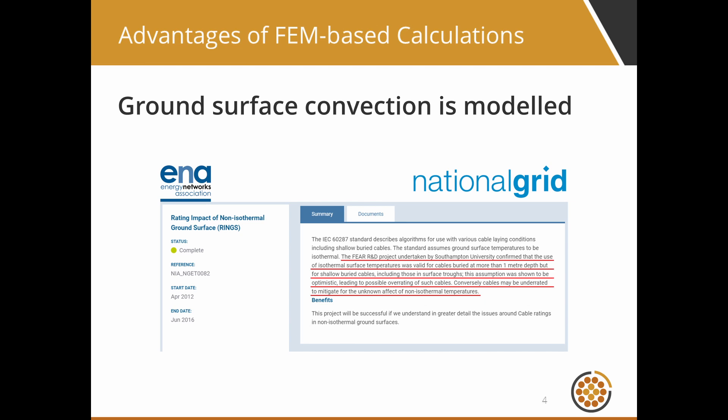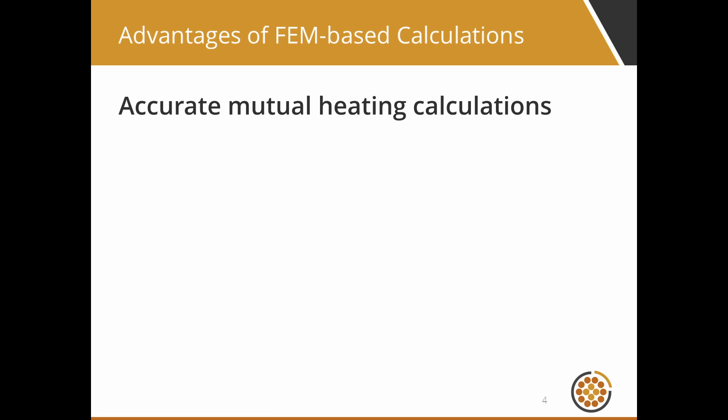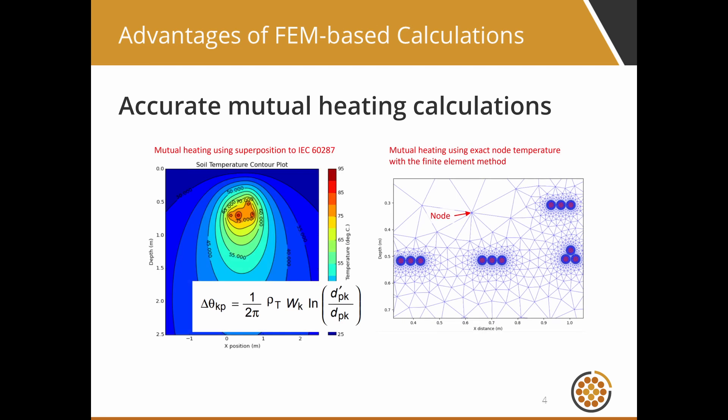A recent study by National Grid using FEM calculations concluded the IEC method overrates cables buried at one metre or less. Thirdly, FEM-based cable rating calculations have accurate ratings for groups of cables. The mutual heating effect for groups of cables is more accurate when using FEM. The IEC standard approach is to calculate the mutual heating for each cable separately and combine heat rise as an algebraic sum using superposition, whereas with FEM the mutual heat flux influence and disturbance are considered simultaneously.